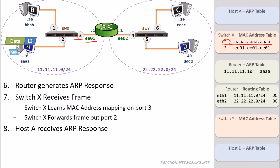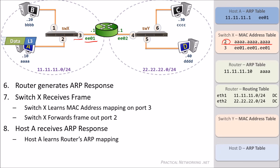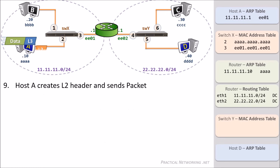Host A will receive the ARP response and will learn the ARP mapping for the address 11.11.11.1. Remember, this whole time the data has been held up at Host A while waiting for the address resolution process to complete. Now that Host A has the router's MAC address, it can finally send the packet to the router. Host A will create a Layer 2 header with a source MAC address of Host A and a destination MAC address of the router.